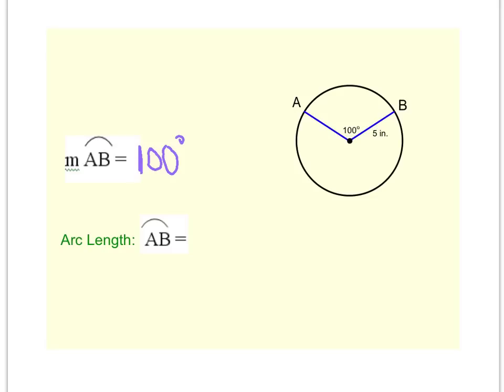Now, by the way, on your note sheet, you need to copy this picture down. Draw arc AB so that there's a 100 degree angle here, and you can see that the radius is 5 inches.